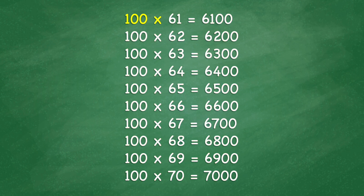100 times 61 equals 6,100. 100 times 62 equals 6,200. 100 times 63 equals 6,300. 100 times 64 equals 6,400. 100 times 65 equals 6,500.